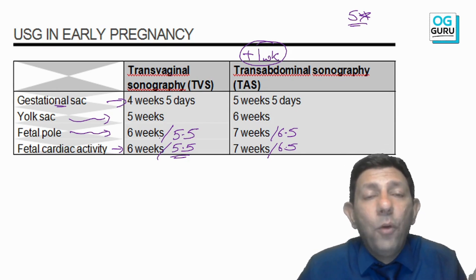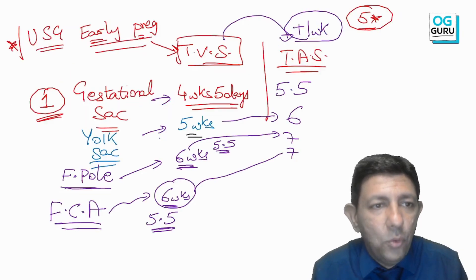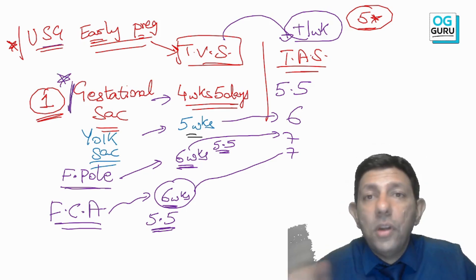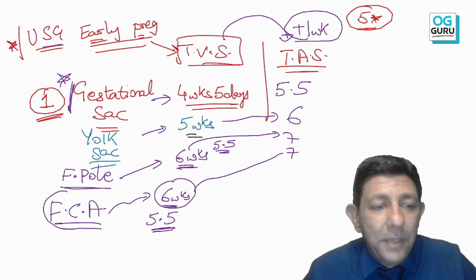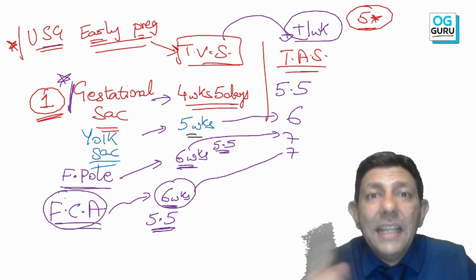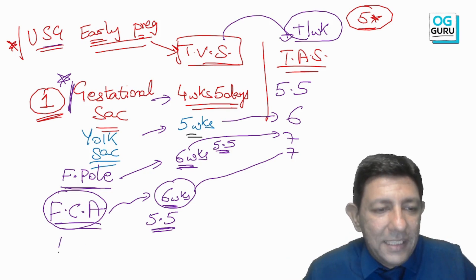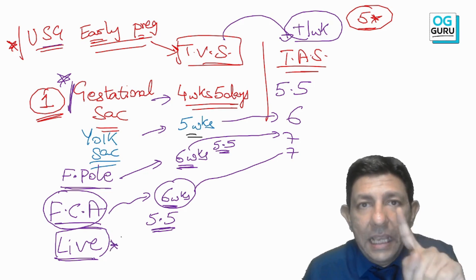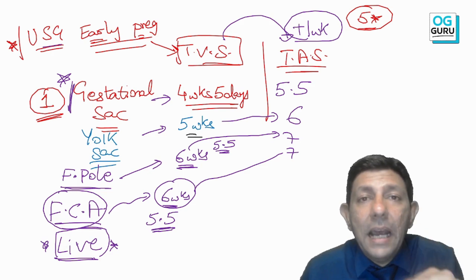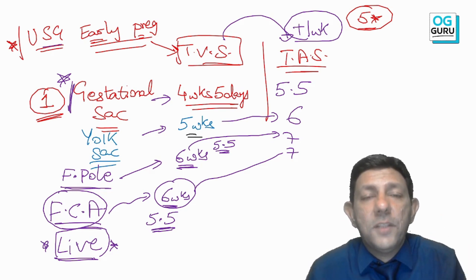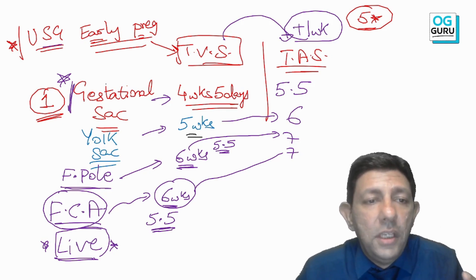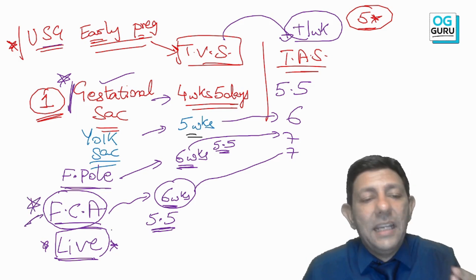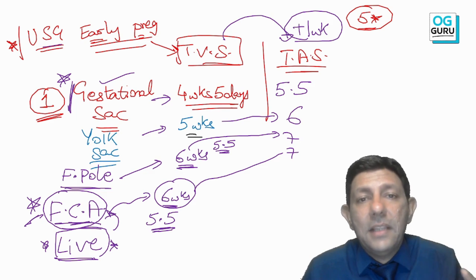Two important MCQ distinctions: the earliest sign of pregnancy on ultrasound is the gestational sac. However, if the question adds the word 'live' — earliest sign of live pregnancy — the answer changes to fetal cardiac activity. Fetal cardiac activity confirms that the baby is alive.